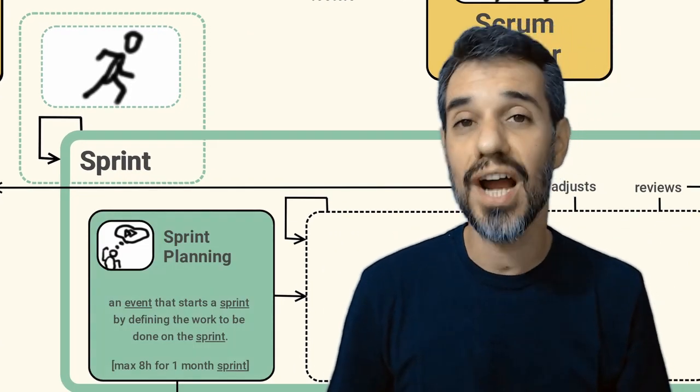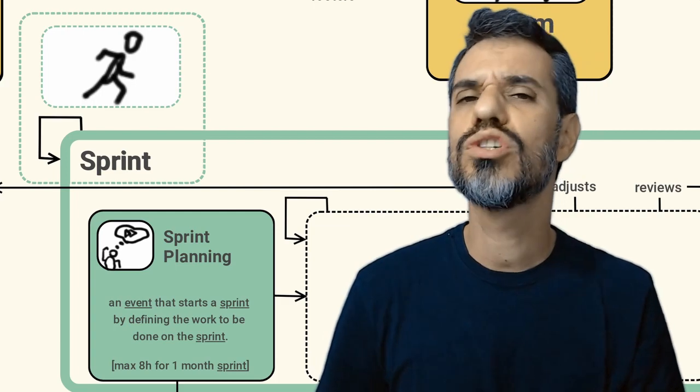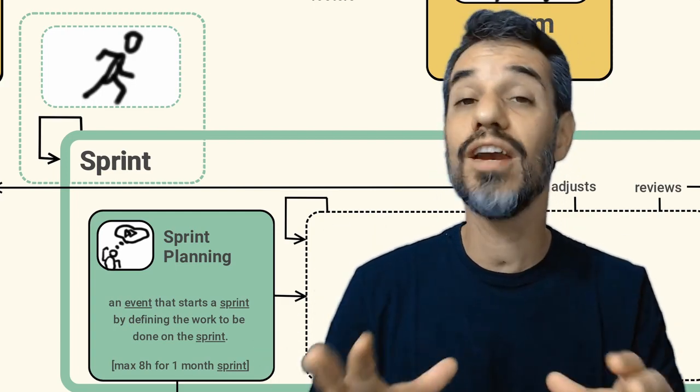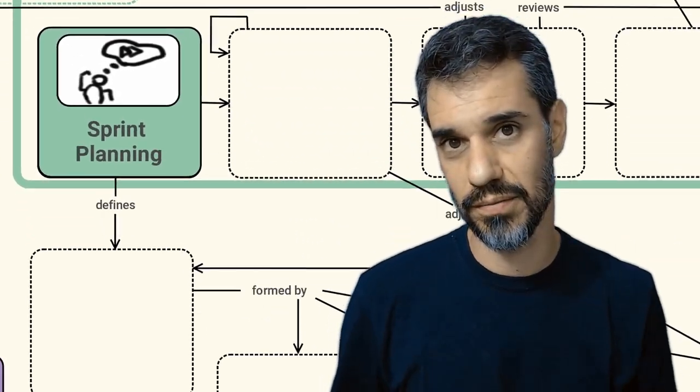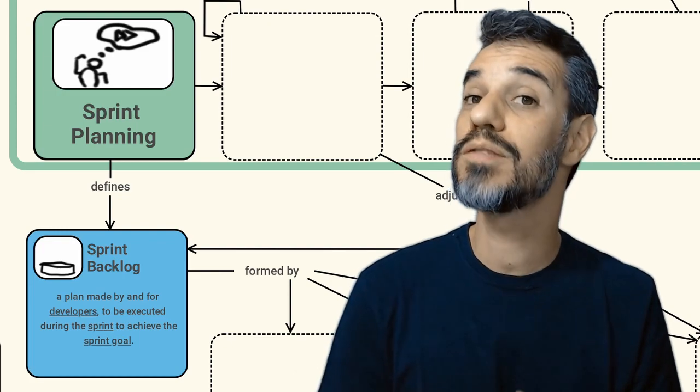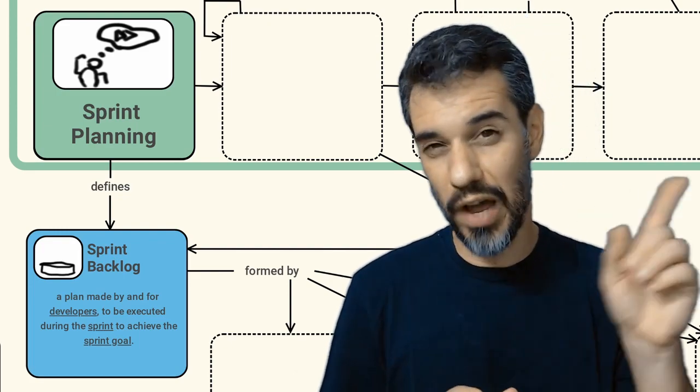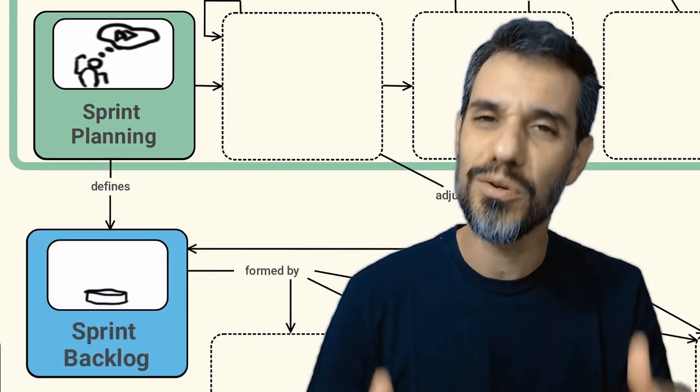Every sprint should start with a sprint planning. At the sprint planning we should plan and define all the work that's going to be delivered by the sprint. The sprint planning defines what we call the sprint backlog. A plan that's made by those developers and that's going to be executed by them.